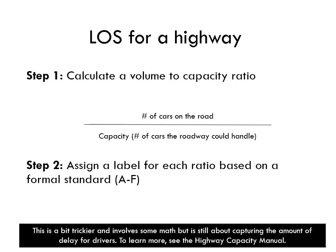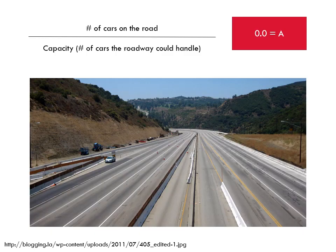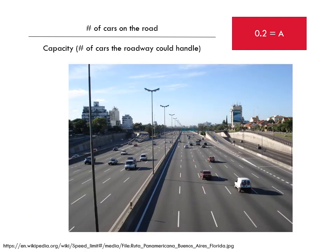In step two, we assign a label or a letter grade for each of these ratios based on a formal standard, A to F. Let's take a look at what this looks like in some real-world examples. First, there are no cars on this highway — the volume-to-capacity is zero and they earn an LOS of A. Next, we add a few more cars, but still a really, really low ratio of cars to capacity, so still an A.